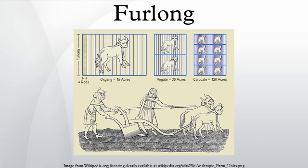Among the early Anglo-Saxons, the rod was the fundamental unit of land measurement. A furlong was forty rods, an acre four by forty rods, or four rods by one furlong and thus 160 square rods. At the time, the Saxons used the North German foot, which was 10% longer than the foot of today.